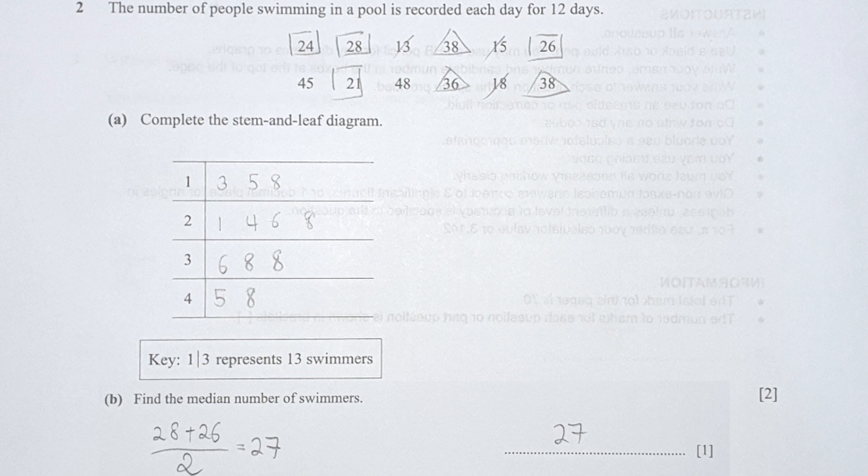For 2, you will have 1, 4, 6, 8. For 3, you will have 6, 8, 8. And 4, you will have 5, 5, and 8.